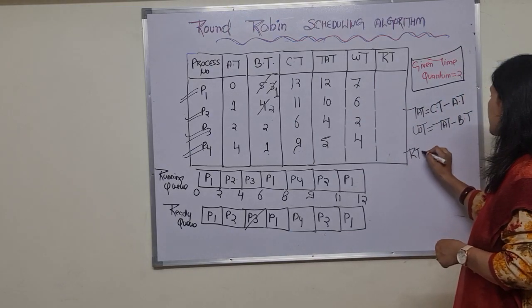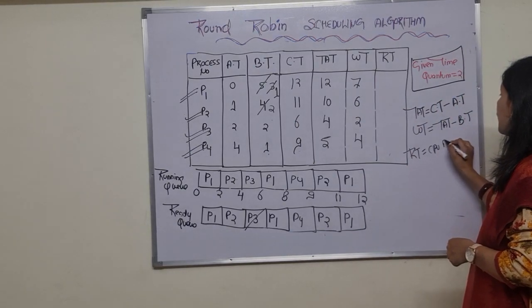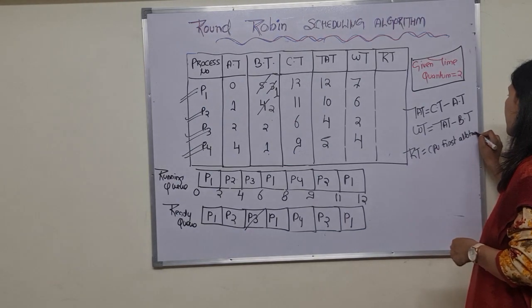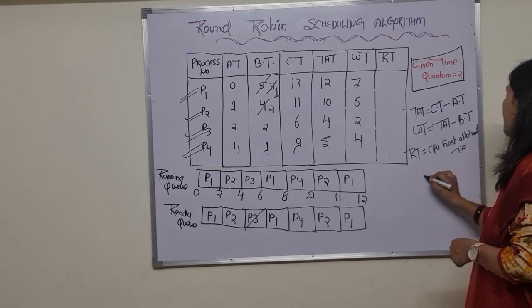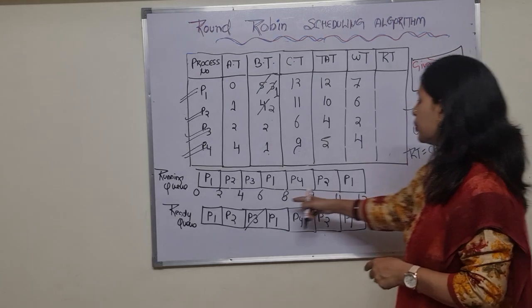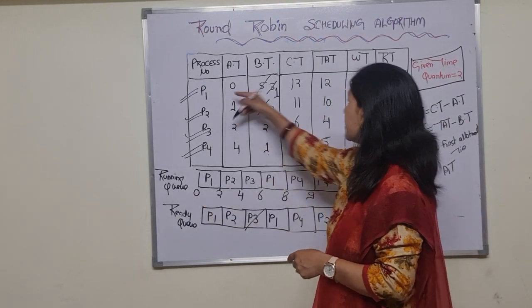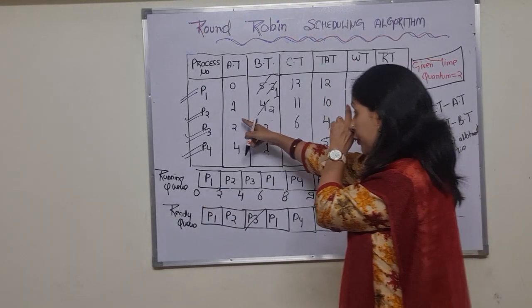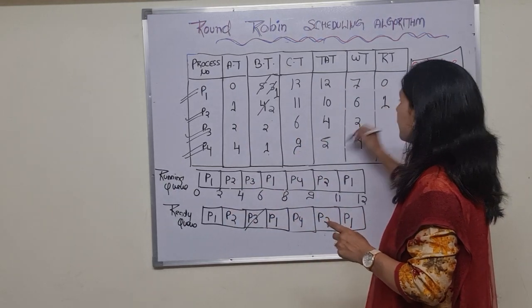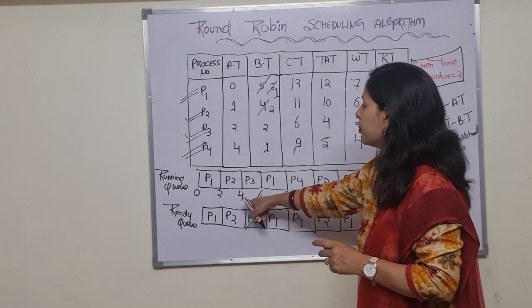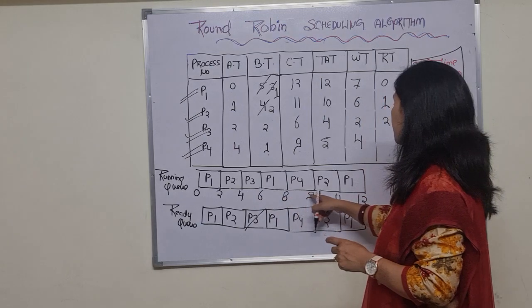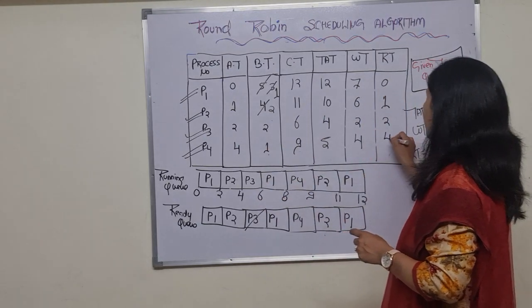Response time equals the CPU first allotment time minus the arrival time. The first allotment time for P1 was 0, so 0 - 0 = 0. For P2, first allotment was at time 2, so 2 - 1 = 1. For P3, first allotment was at time 4, so 4 - 2 = 2. For P4, first allotment was at time 8, so 8 - 4 = 4.